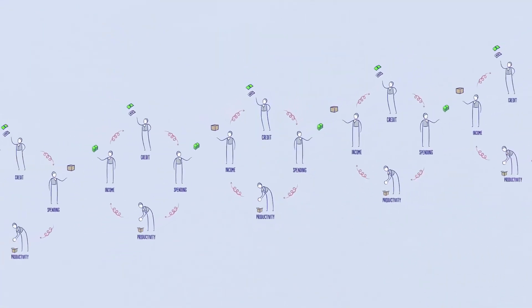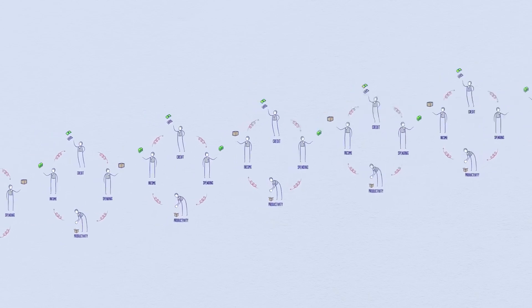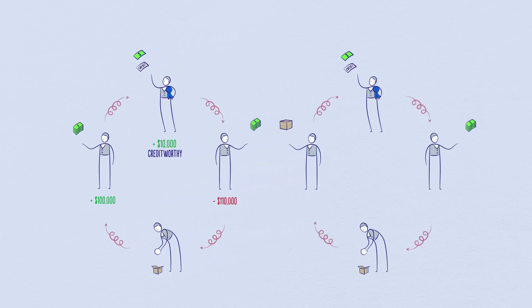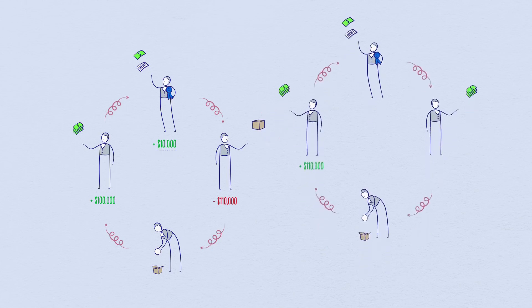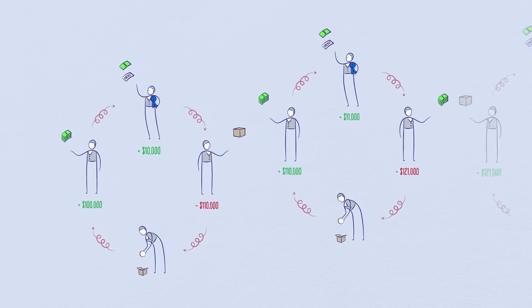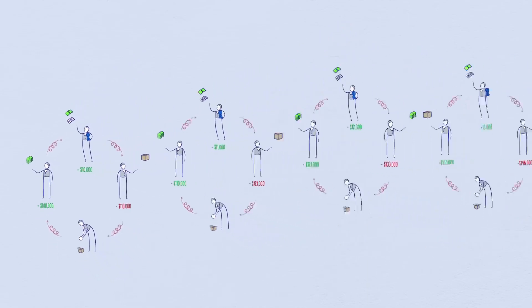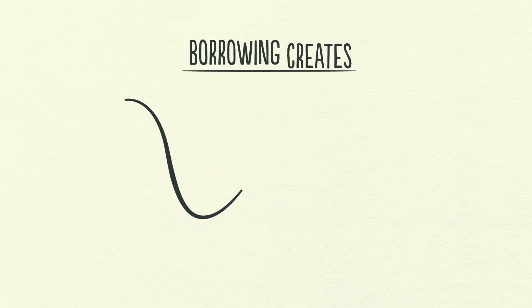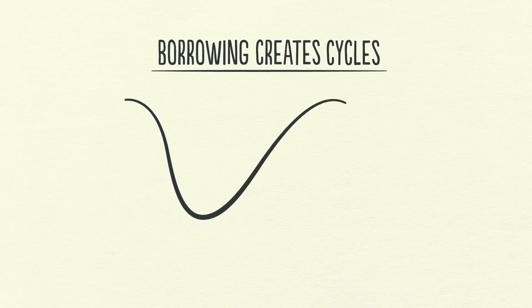In an economy with credit, we can follow the transactions and see how credit creates growth. Let me give you an example. Suppose you earn $100,000 a year and have no debt. You are creditworthy enough to borrow $10,000, say on a credit card. So you can spend $110,000 even though you only earn $100,000. Since your spending is another person's income, someone is earning $110,000. The person earning $110,000 with no debt can borrow $11,000 so he can spend $121,000 even though he has only earned $110,000. His spending is another person's income and by following the transactions we can begin to see how this process works in a self-reinforcing pattern. But remember, borrowing creates cycles and if the cycle goes up, it eventually needs to come down.